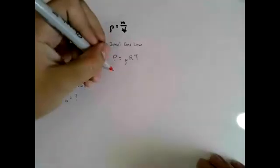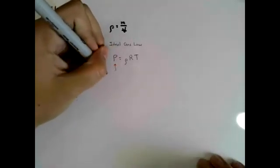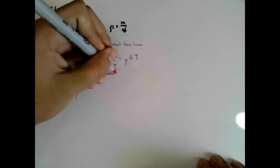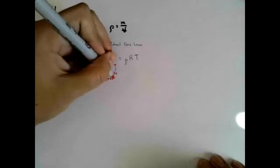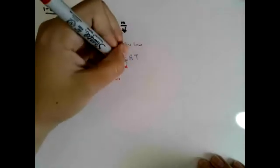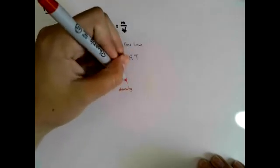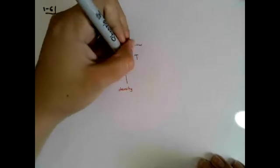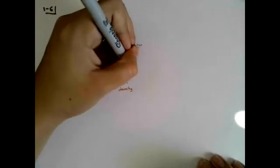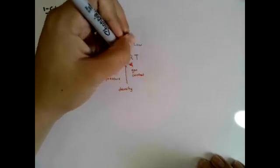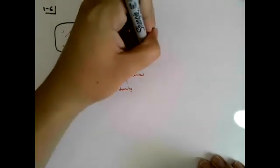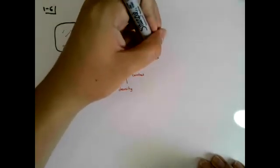What do these terms represent? In this equation, my P is my absolute pressure. My rho is my density. My R is my gas constant. My T is my absolute temperature.